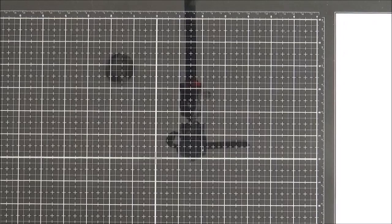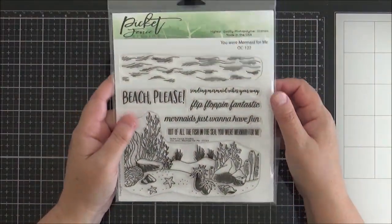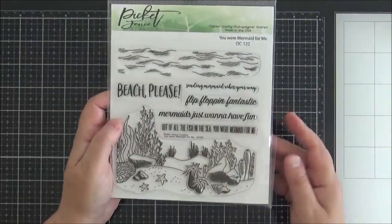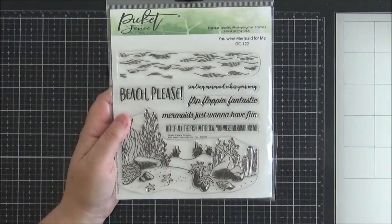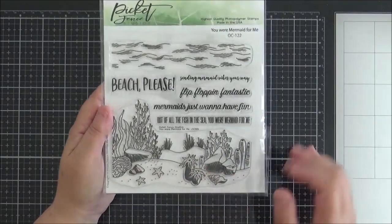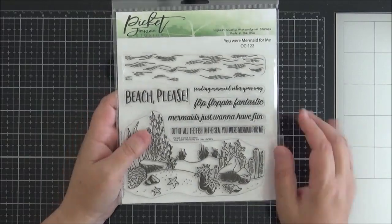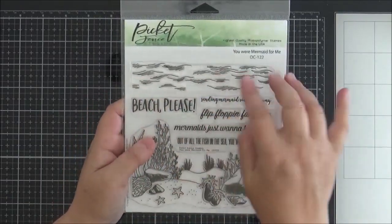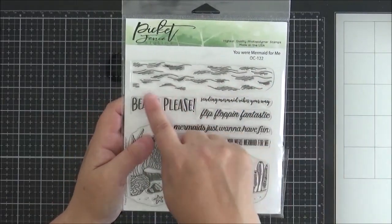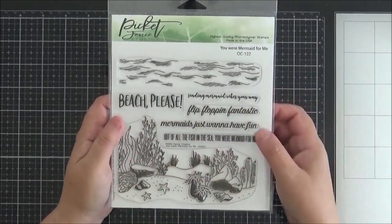For my next card, I have used this set here. This is called You Were Mermaid For Me. This is kind of what I call a stamp and go set. It's one of these where you don't have to do any masking. You can just stamp your image down onto some cardstock, color it and away you go. You've got some waves up there. That would fit really well on a slimline and an A2. And you've got some great sentiments here.